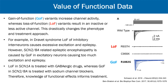For example, Dravet syndrome in SCN1A is caused by loss of function. Impaired inhibitory interneurons cause excessive excitation and epilepsy. However, early epileptic encephalopathy in SCN2A and SCN8A is caused by gain of function in excitatory neurons causing too much excitation. Loss of function in SCN1A is treated with GABAergic drugs, whereas gain of function in SCN2A and SCN8A is treated with sodium channel blockers. Therefore, knowledge of the underlying variant effects can inform treatment choice.